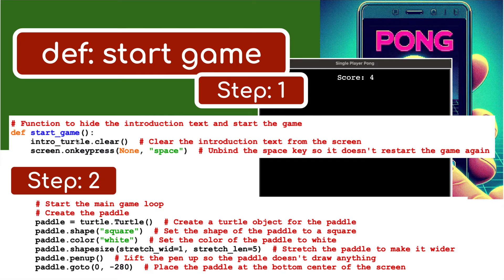A new function define start_game. It's going to clear - intro_turtle.clear() - the introduction text as soon as we press the space bar. So screen.onkeypress() - that's going to unbind the space key to make sure it doesn't restart the game again.